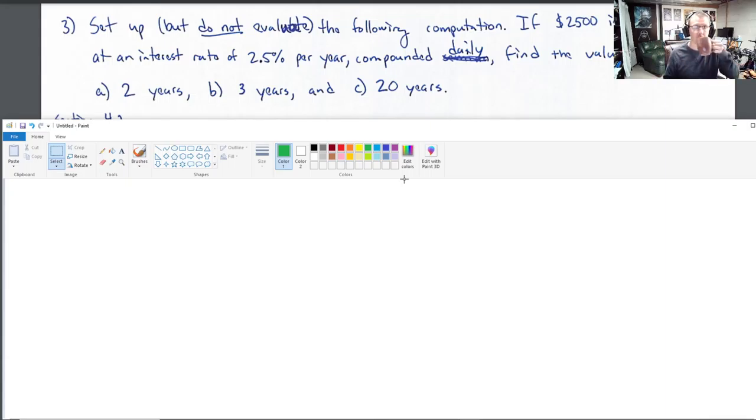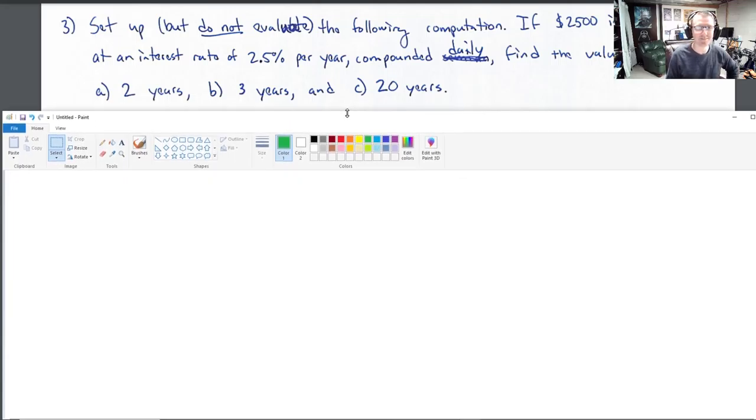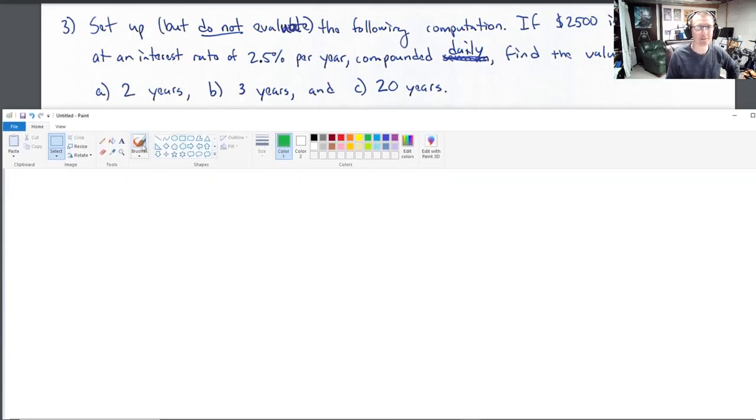If 2,500 is invested at an interest rate of 2.5% per year compounded daily. Oh boy, this requires the number of days in a year. I might have to pause the video and look that one up. Pretty sure it's 365. We're not going to go with the decimal number. We're going to go with the whole number of days in a year. Despite the fact that that is false. And that's why we need leap years.